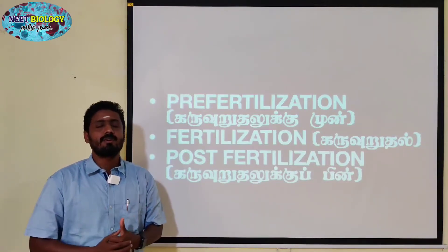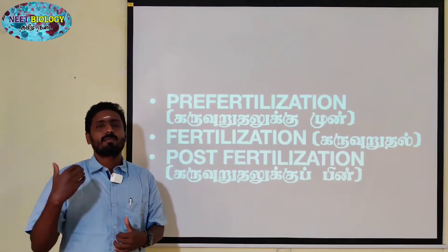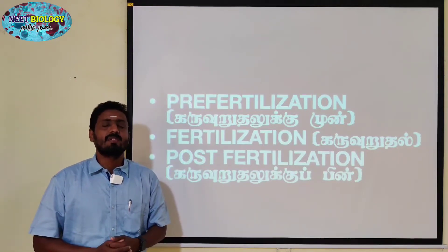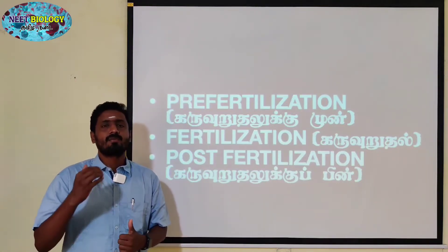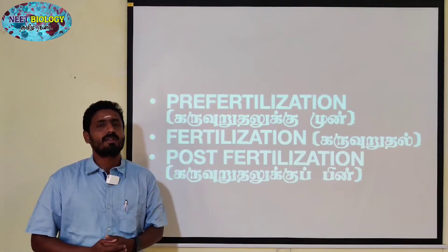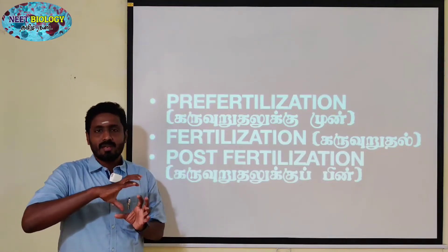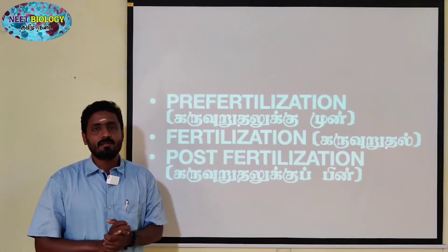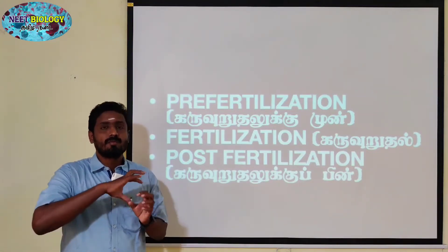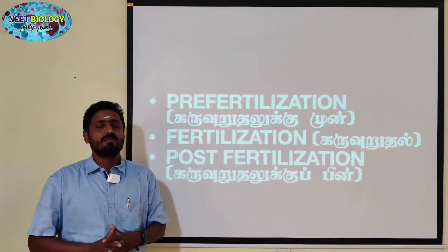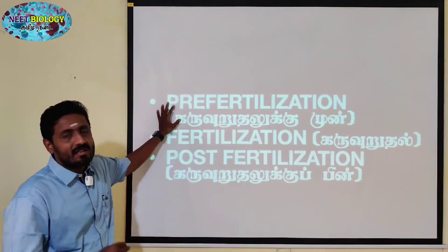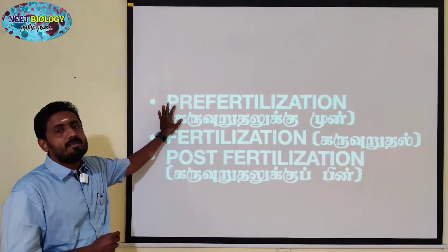The plant grows, reaches maturity, then reproduction occurs, and the process goes to fertilization. This is the life cycle. The life span is called Ayut column. There are three phases in this life cycle.